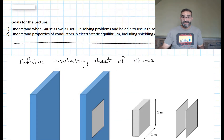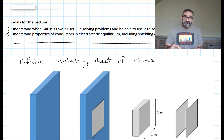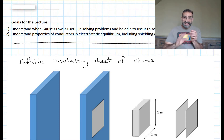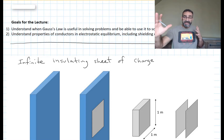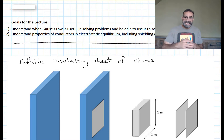We just did an example in the last video of an infinite insulating sheet of charge. When I use the term sheet, I mean a very thin, large surface area. In textbooks, they'll often use the word plate when they mean it's a conductive material — a very thin, large, flat surface area that's conductive. And a sheet would be a very large, flat surface area that's insulating.